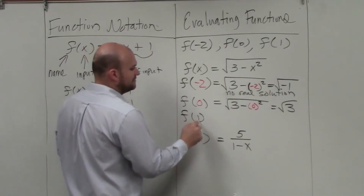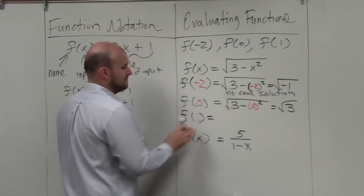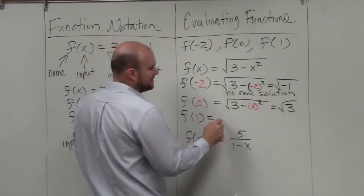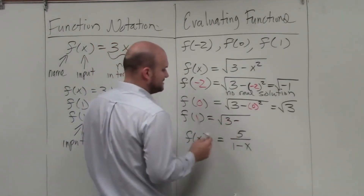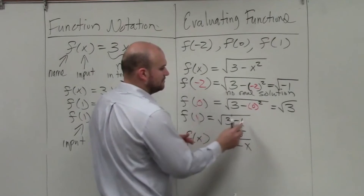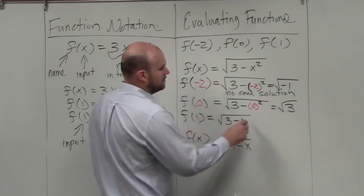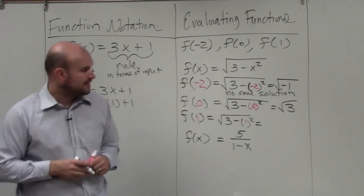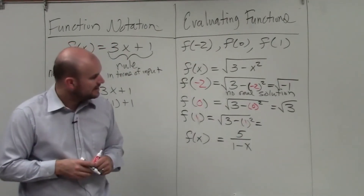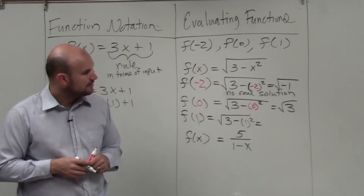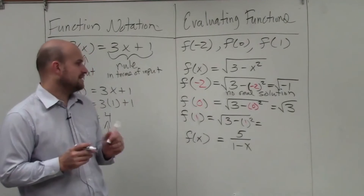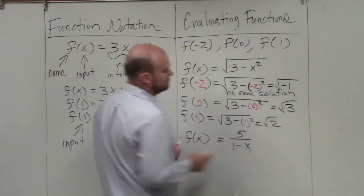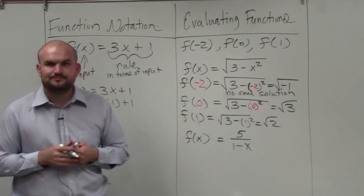Let's do f of 1. If I replace x with 1, that would be the square root of 3 minus 1 squared. 1 squared is 1, 3 minus 1 is 2, so f of 1 equals the square root of 2.